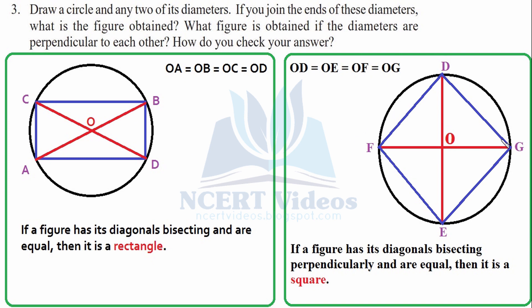Again here, we did the same thing. If you join the ends of these diameters, what is the figure obtained? Now, he has asked us to join the ends of diameters. So, we are joining it. What does it make? It makes a quadrilateral, having four sides.